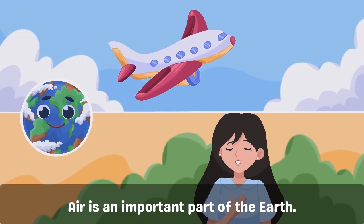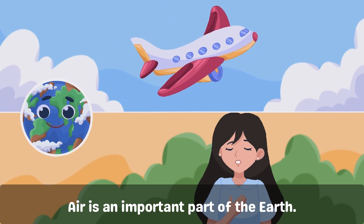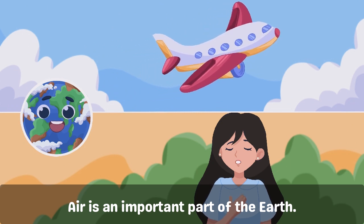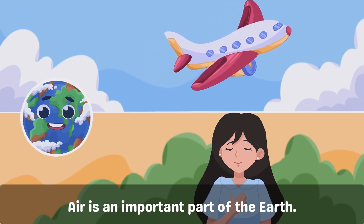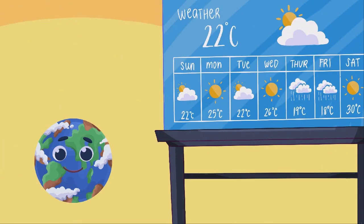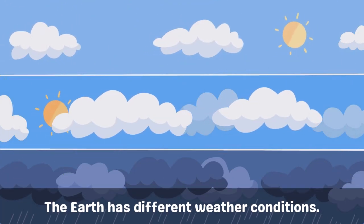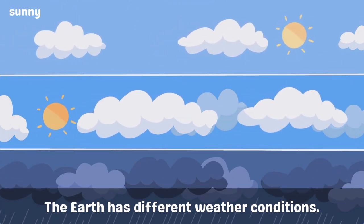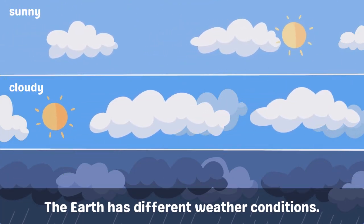Do you see the white clouds floating in the air? Air is another important part of me. It is made of different gases like oxygen and carbon dioxide that living things breathe. Unlike other planets, I have different weather conditions that are suitable for living creatures like you to survive.